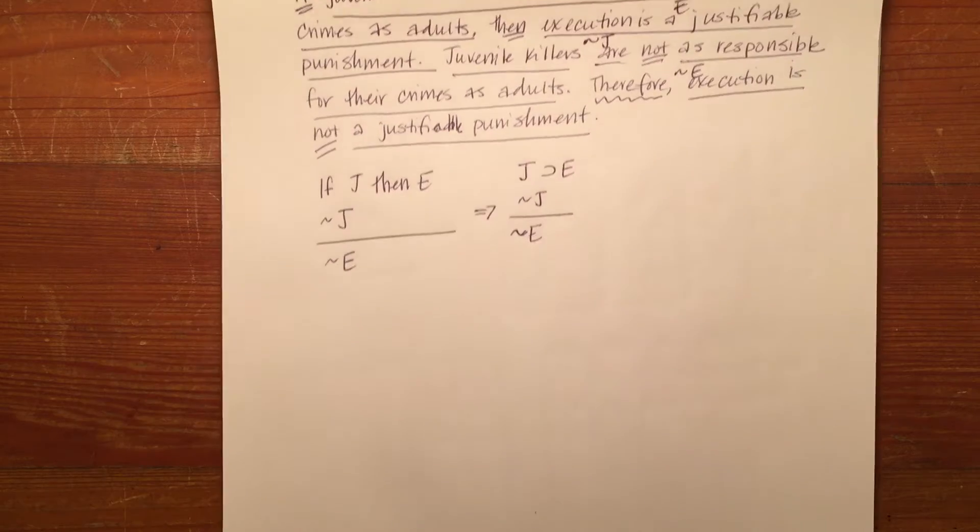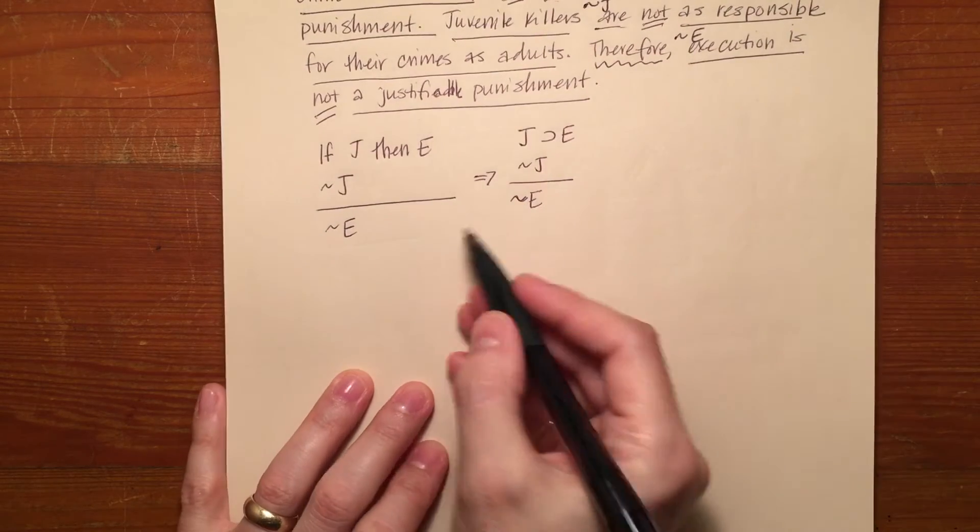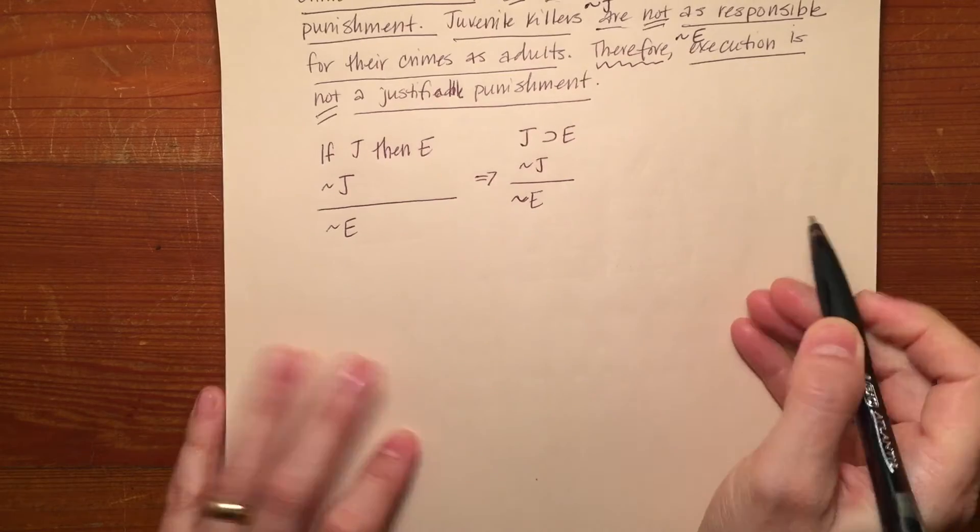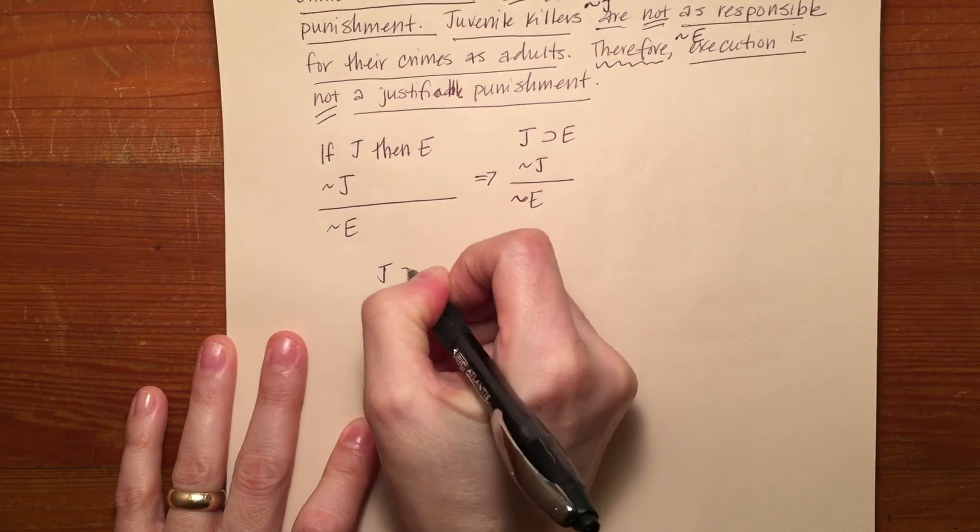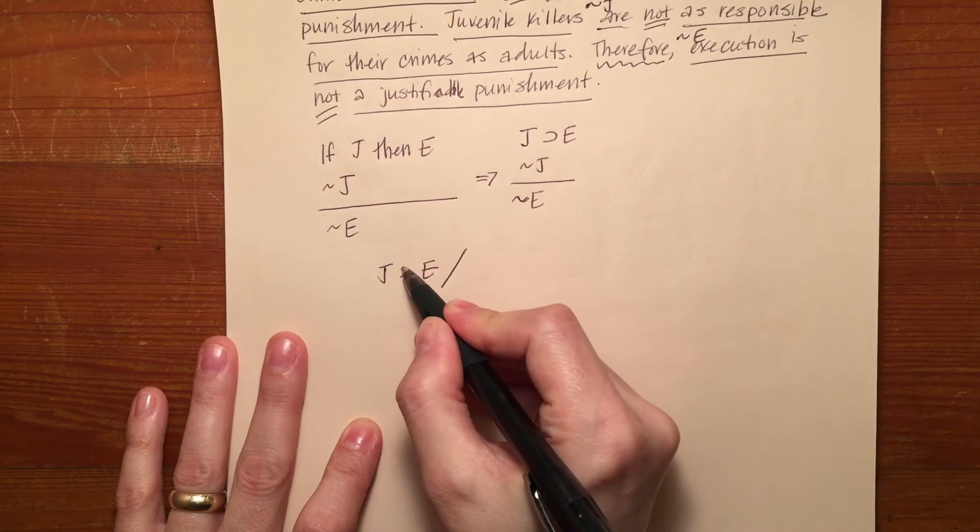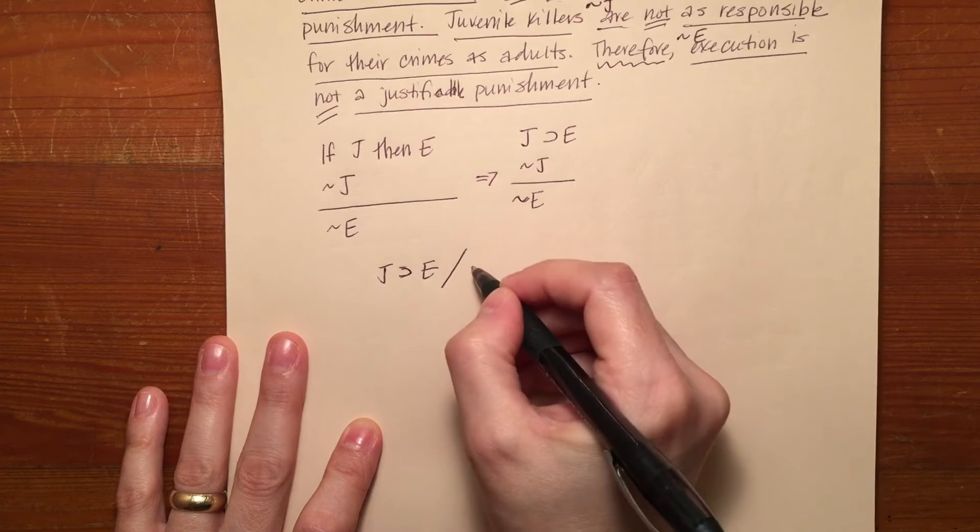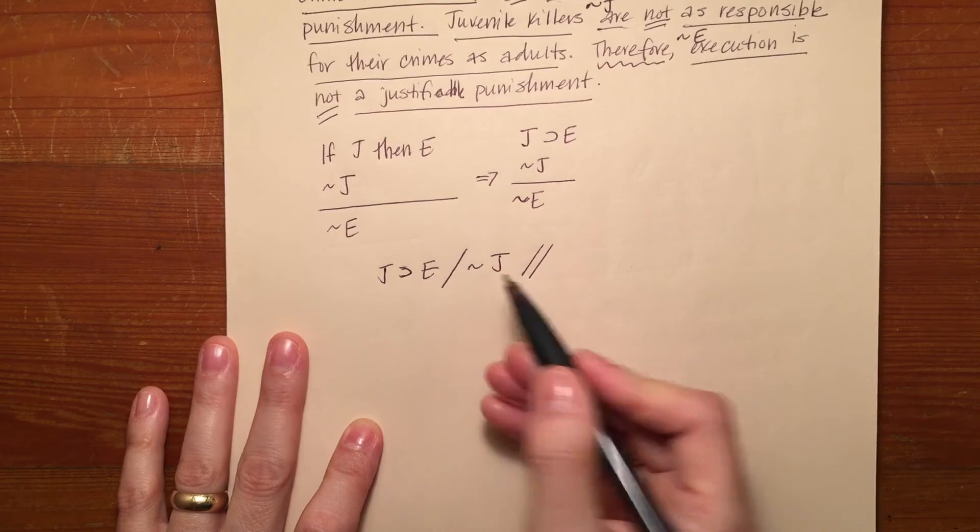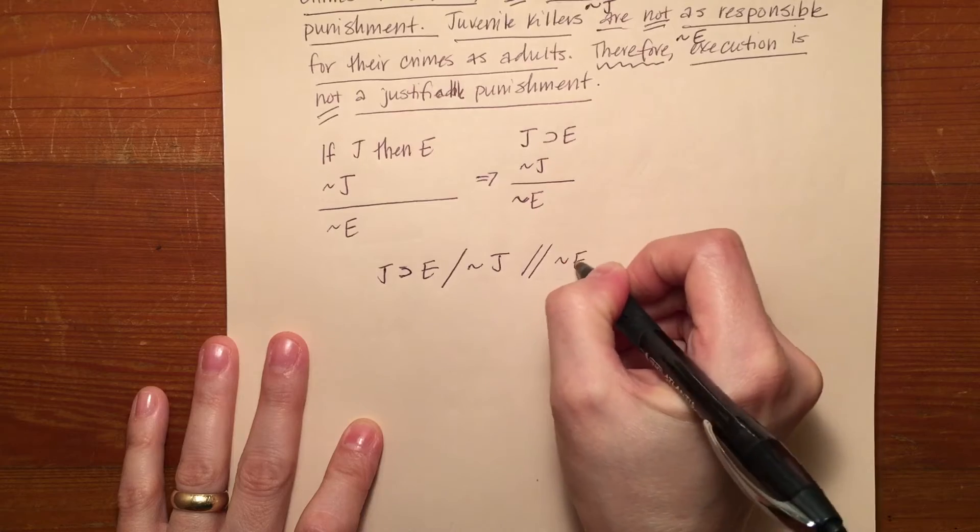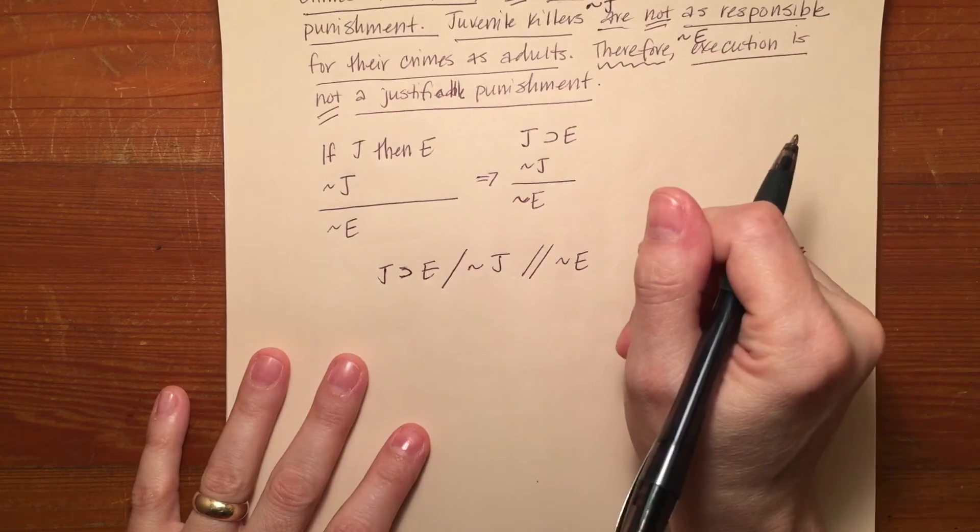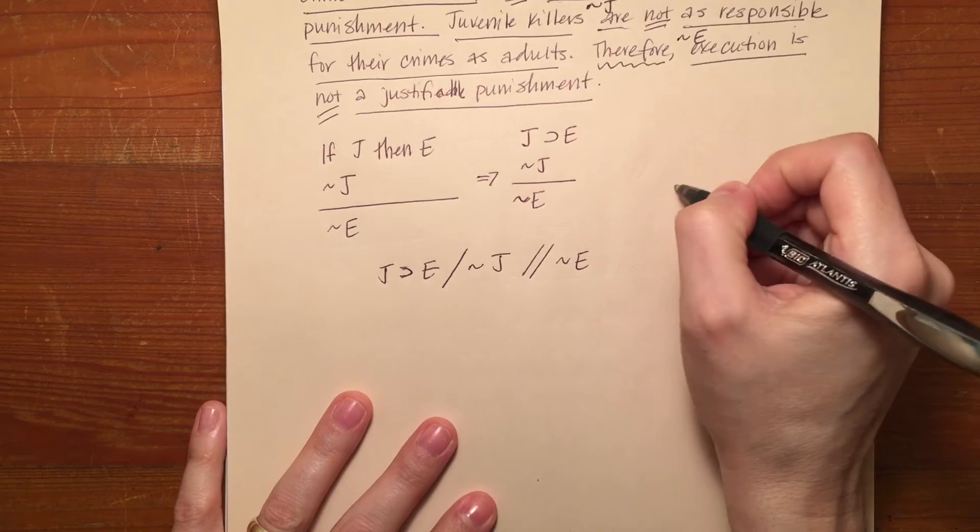Now, the way that I create a truth table for this argument is just to write this argument out from top to bottom across. So it becomes J implies E, one slash between the first premise and the second premise. The second premise is not J. Then a double slash between all the premises and the conclusion not E. Then I simply set up my truth table exactly the way that I would normally.